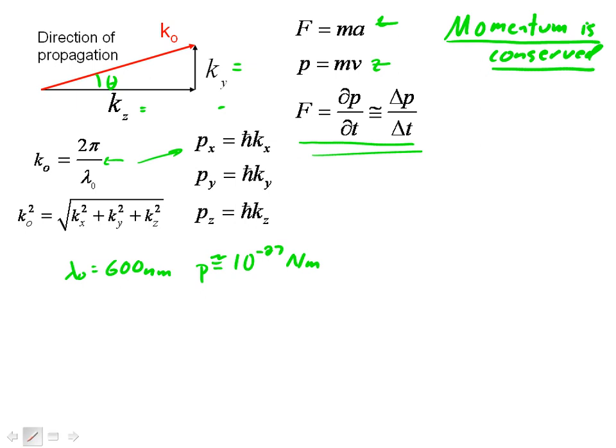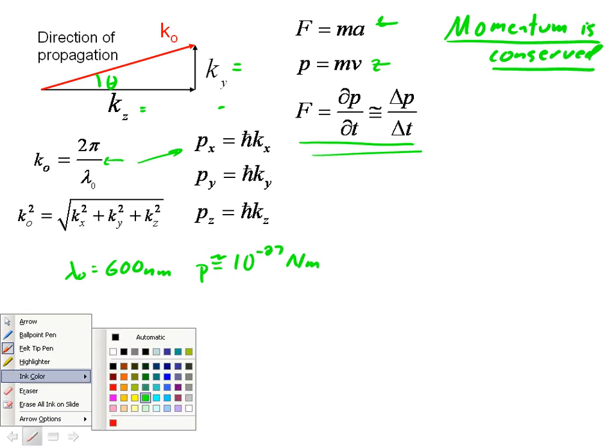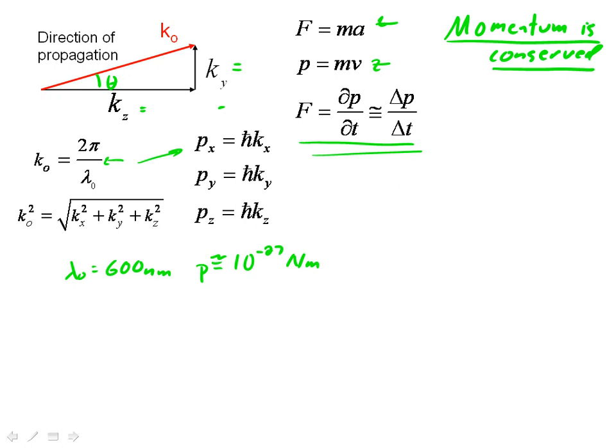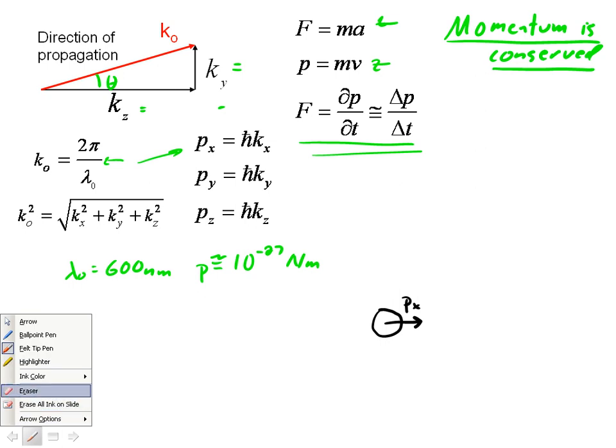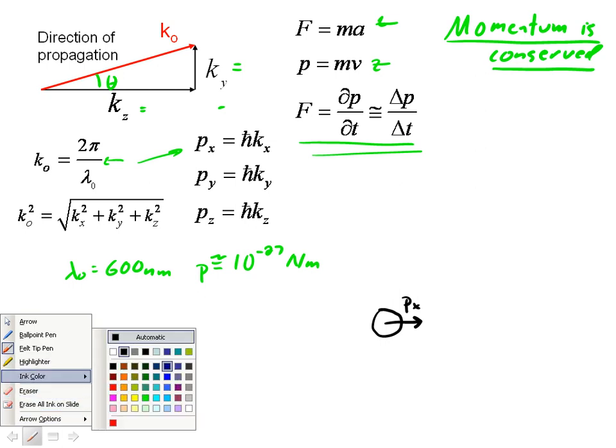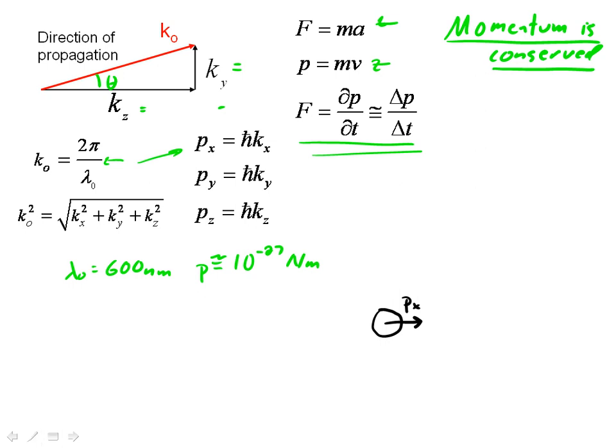Let's go ahead and look at the momentum conservation thing again real quickly. Let's say we have a system. Our system consists of one ball that is initially moving with momentum in that direction. Let's call this the x direction. And we have another ball that this ball is going to hit. And this ball has zero momentum. It's just sitting there.